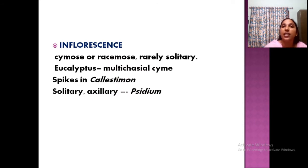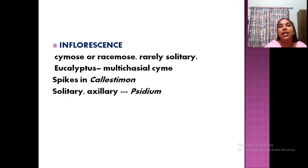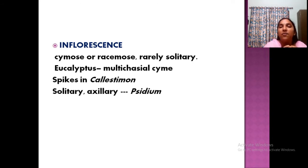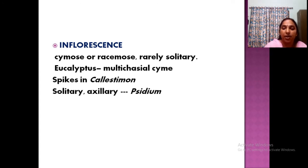Inflorescence usually occurs in cymose or racemose manner; rarely solitary inflorescences are present. In eucalyptus it is a multiracial cyme with different branches in various arrangements. Spikes occur in Callistemon, which is a garden bottle-brush plant having spike inflorescence. Axillary and solitary inflorescence are present in Psidium, which is the guava — Psidium guajava.